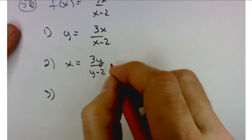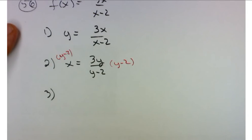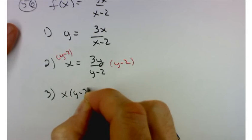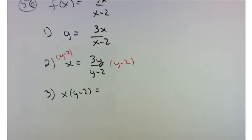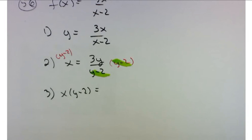And you might notice because we have y's in a couple places that this is going to make this a little bit more challenging. I suggest that you multiply both sides by y minus 2 and get x times y minus 2. And on the right hand side, this is going to cancel equals 3y.